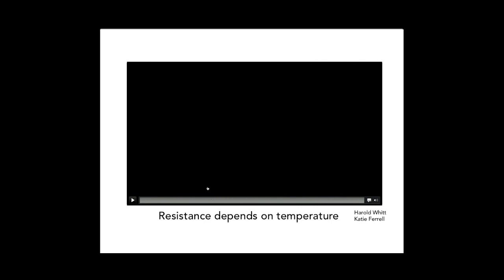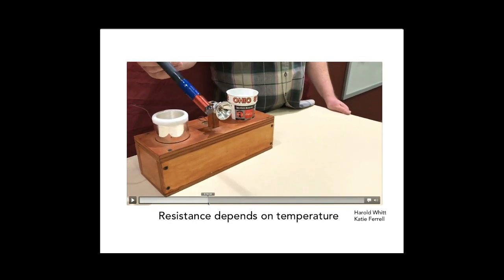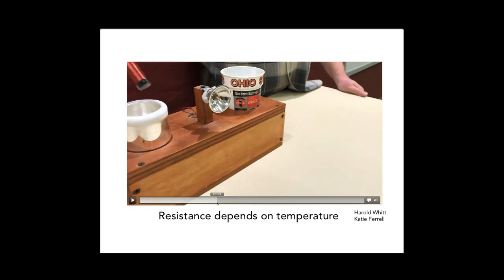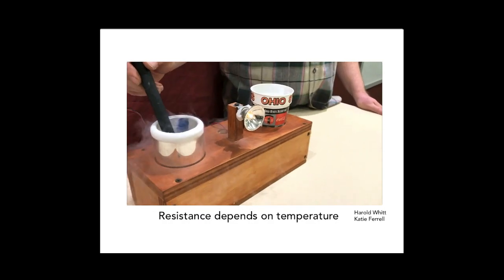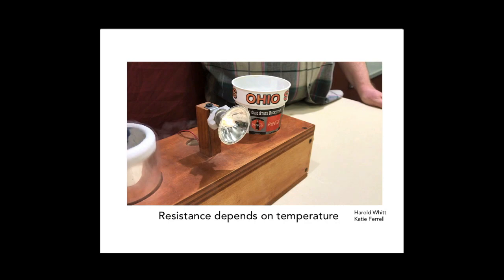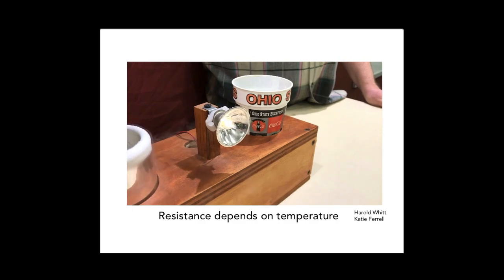Resistance also depends on temperature for the same material. Here I have a coil — you can see the bulb is lighting very faintly. This copper coil is in air at about 70 degrees Fahrenheit. If I dip it in liquid air, you can see the bulb grows really bright. That tells you the resistance dropped so that more current flowed through the wire. Resistance is dropping as the temperature goes down because liquid nitrogen is much colder than room temperature. If you dip it back in water, the bulb has gone back to its faint form — the same material can have different resistance just because of temperature.